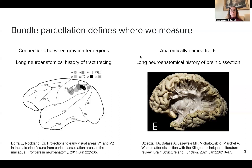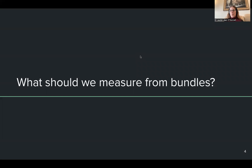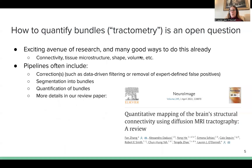This parcellation defines where we measure. Once we've defined where we want to measure, the next question is what should we measure from these bundles? How should we quantify bundles, or perform tractometry as it's sometimes called? This is an exciting avenue of research. One way is connectivity strength. Another way depends on the tissue microstructure of the connections as measured by diffusion MRI. And finally, we can also look at the shape of these connections or fiber tracts and their volume and more.